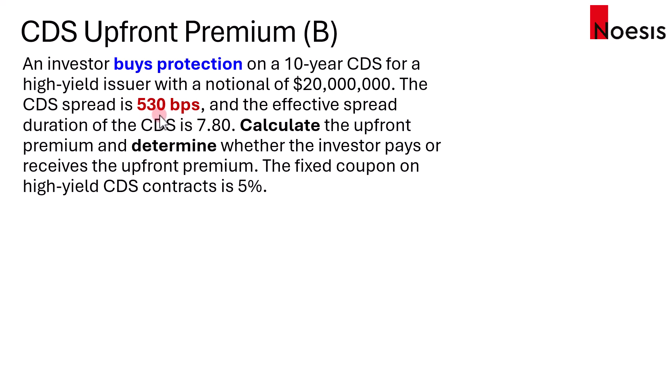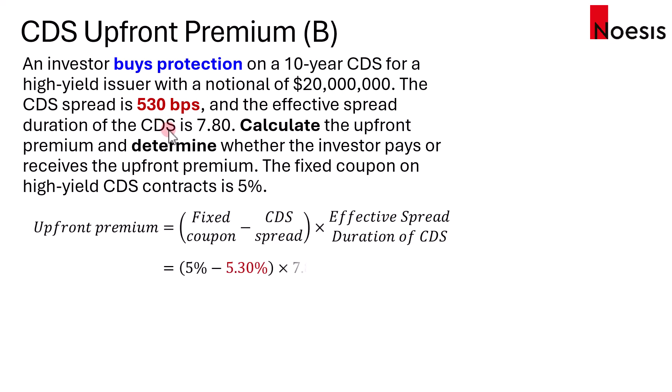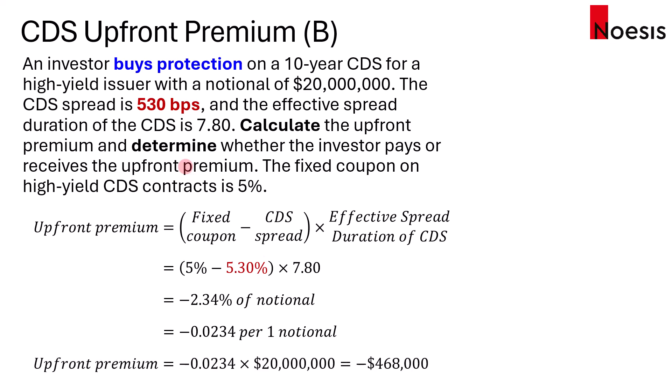In the second example, the same investor buys protection, but the CDS spread at contract initiation is 530 basis points, which is higher than the fixed coupon. Redoing the calculation with 5.3%, the upfront premium would be negative 2.34% of the notional, or negative 0.0234 per one unit notional. Scaled to a $20 million notional, the upfront premium would be negative $468,000.